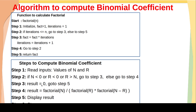In step 3, we set result equal to 0 and go directly to step 5 to display the result. If the condition is false, we go to step 4, where we calculate the result based on the formula: factorial of n divided by factorial of r into factorial of n minus r. After calculating, we display the result, and in step 6, we stop.